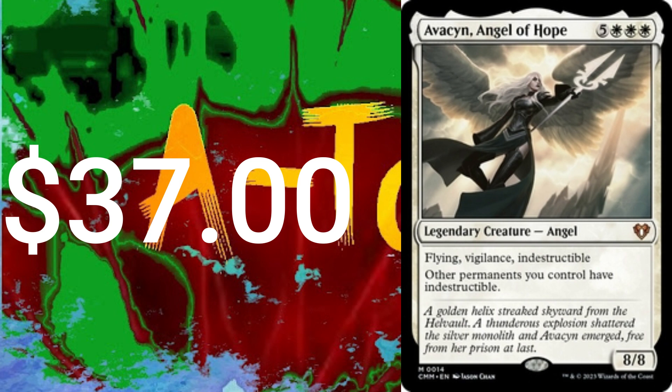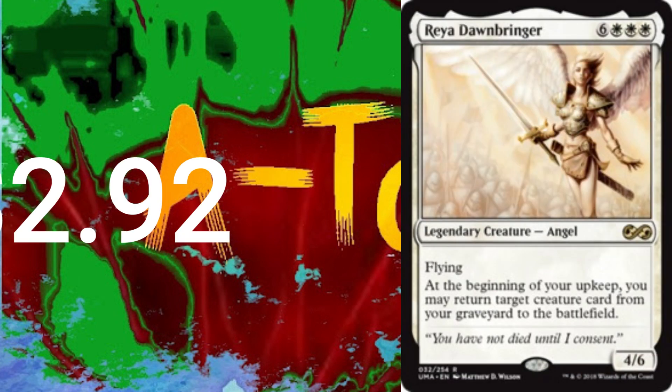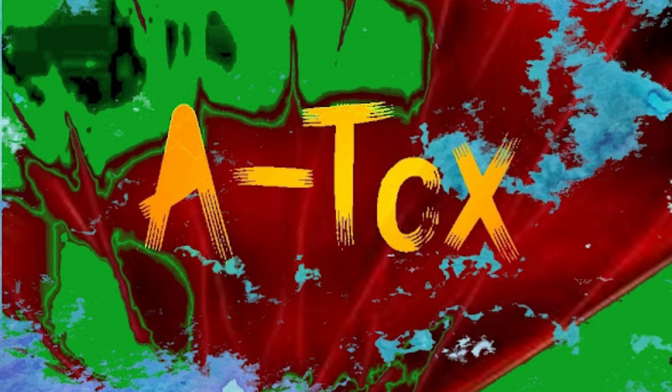Avacyn, Avacyn Angel of Hope, and Reya Dawnbringer. We have two planeswalkers amongst all this in the deck. Both Elspeths.